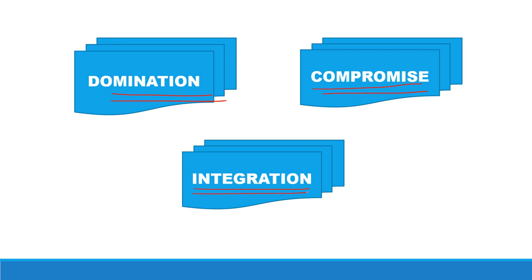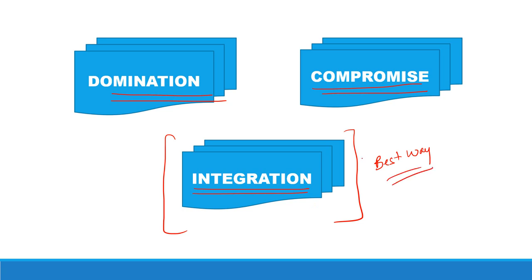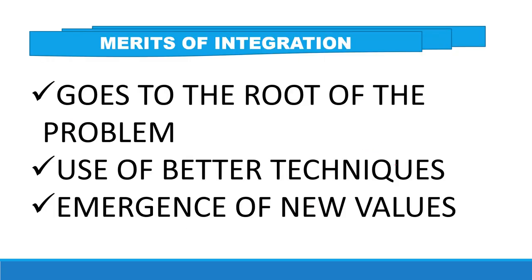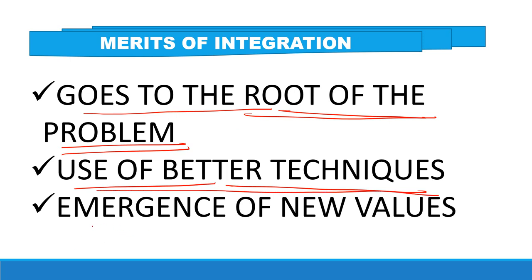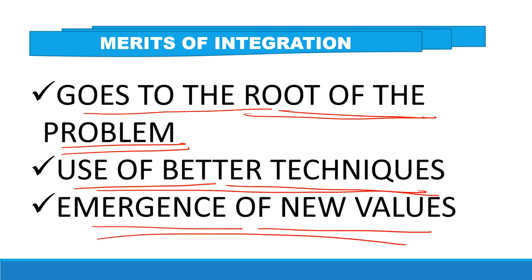The third way is integration. In integration, both parties come up with a new solution that satisfies the needs of both parties, and neither side has to make a sacrifice. According to Follett, of these three ways, the third way — that is integration — is the best way to resolve a conflict, because it has many merits: it resolves the conflict once and for all because it goes to the root of the problem and discards the conflict from the root. Second, it makes better use of techniques and saves time and resources. Third, it leads to the emergence of new values and develops a new situation.